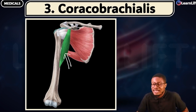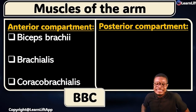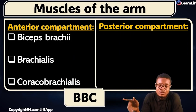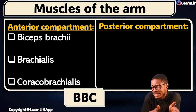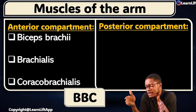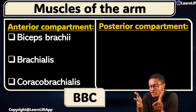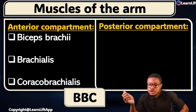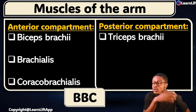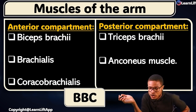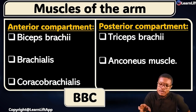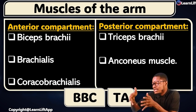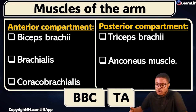We have looked at the muscles of the anterior compartment — your BBC: biceps brachii, brachialis, and the coracobrachialis. Now for the posterior compartment, what's left is TA: triceps brachii and the anconeus muscle.